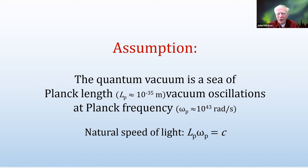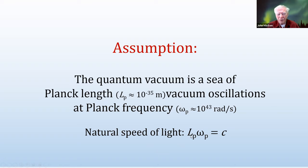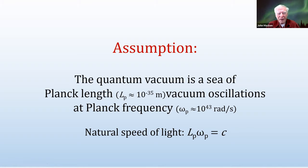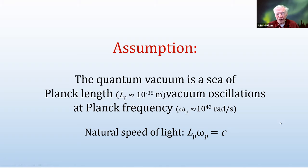In this model, oscillations propagate at the speed of light — Planck length times Planck angular frequency equals c. I use capital L for Planck length since it's a wave property. Just as the speed of sound in air is determined by the thermal velocity of molecules — giving a conceptual understanding of why sound travels at that speed — we can now understand why waves propagate at c. This is not an externally imposed law; it emerges from the physics of the vacuum.